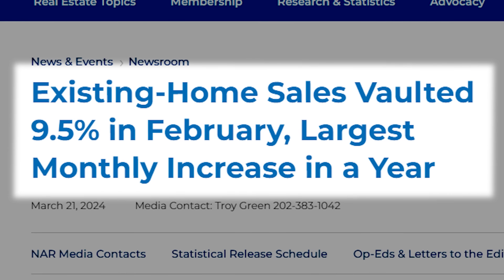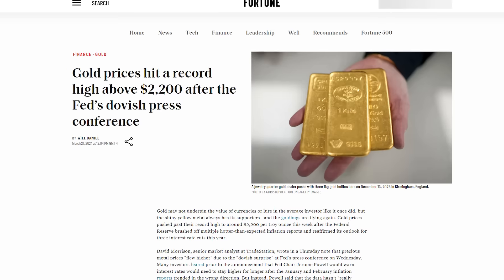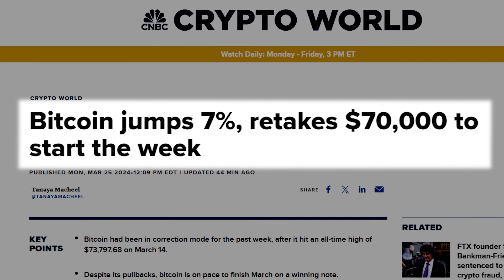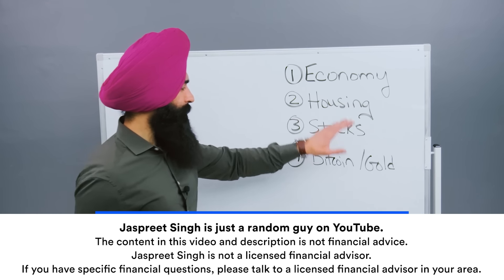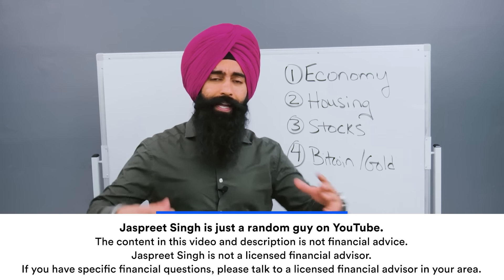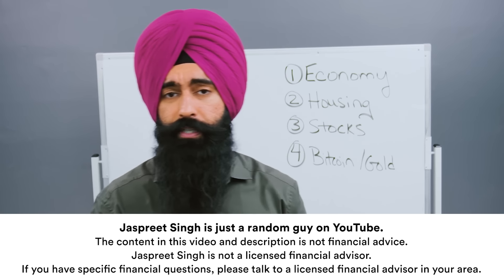Now, it's pretty easy to see why the Federal Reserve Bank is saying this. The housing market has been booming. The stock market has been booming. Gold prices have been booming, and even Bitcoin has been booming. So let's do this. Let's break down what's going on in the economy, the housing market, the stock market, and then Bitcoin and gold, and talk about what this means for your wallet and where the opportunities are.